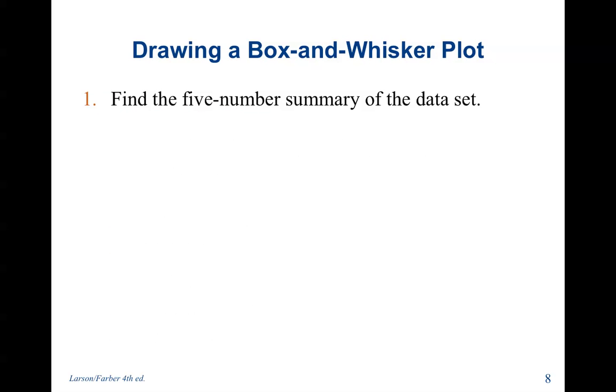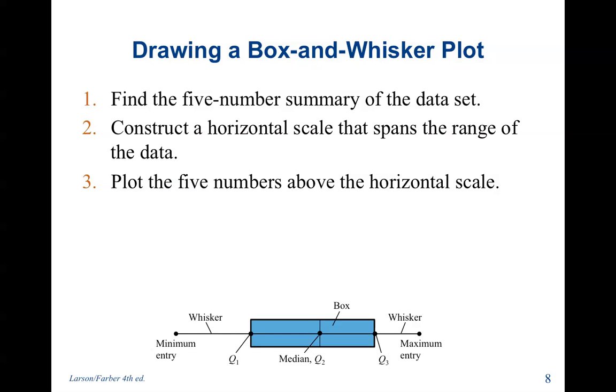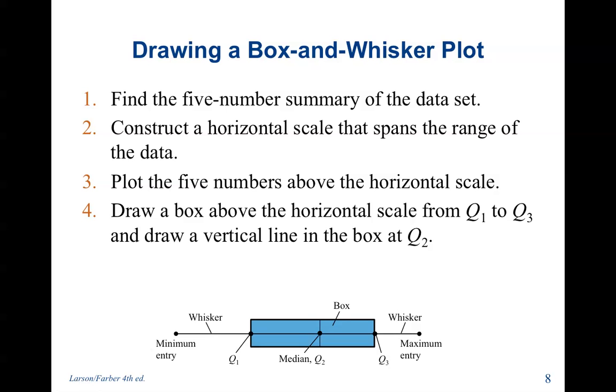So drawing a box and whisker plot. First I need to find the five number summary of the data set, then I need to construct a horizontal scale that spans the range, which is shown below, and then plot the five numbers above the horizontal scale. So the dot is the minimum entry, then we have a whisker to Q1, and this is where our box starts at Q1 to Q3. We also draw a line in the middle here at the median, the third dot, the fourth dot is Q3, and the last one is the maximum entry. Draw a box above the horizontal scale from Q1 to Q3, and then draw a vertical line at Q2, and you have created a box and whisker plot.